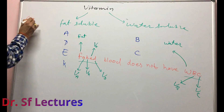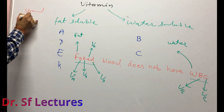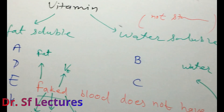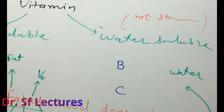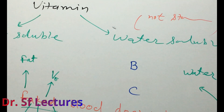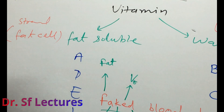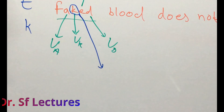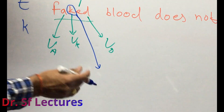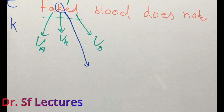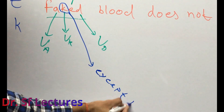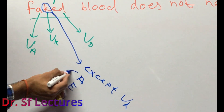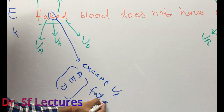Fat-soluble vitamins are stored in our fat cells. Water-soluble vitamins are not stored in our body, so they need to be replaced daily. Fat-soluble vitamins are stored in our body. One important exception: vitamin K is not stored in the body for a prolonged time — it is stored for only a very short time. So, except vitamin K, vitamins A, E, and D are all stored in fat cells.